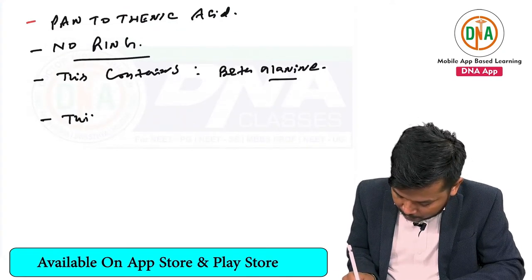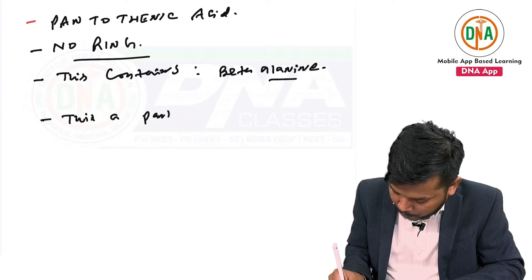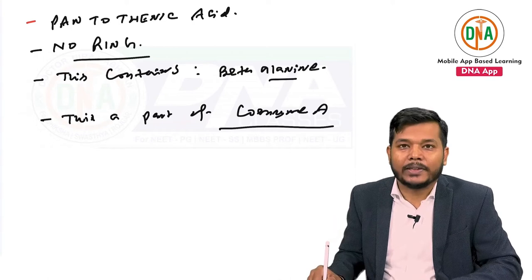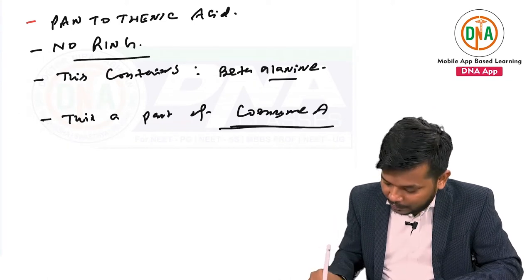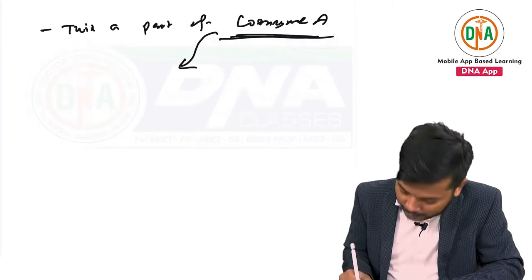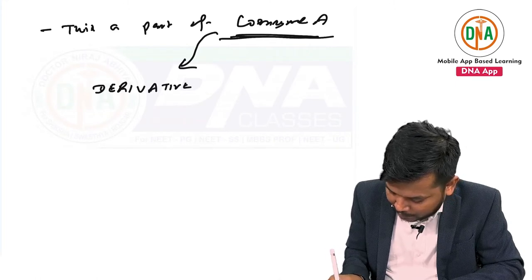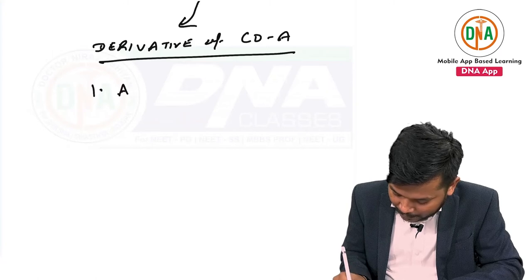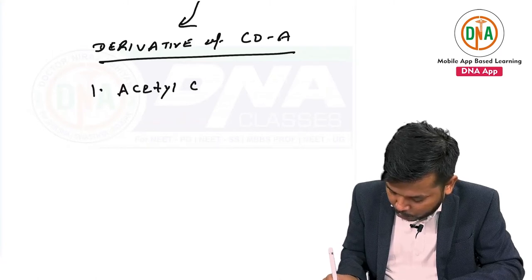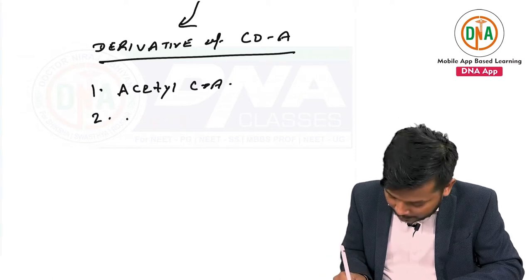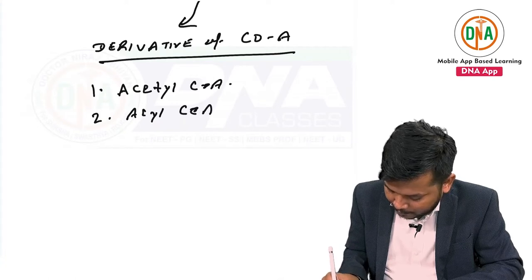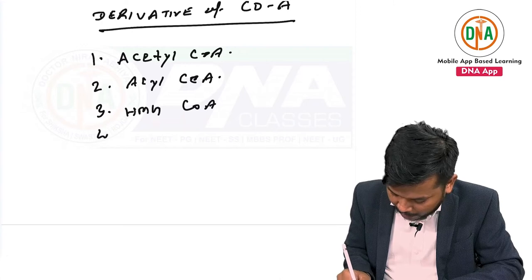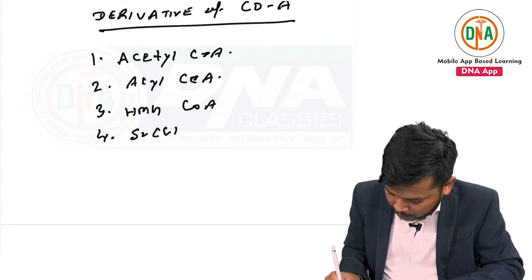Vitamin B5 is a part of coenzyme A. You must know the derivatives of coenzyme A. The derivatives are: first, acetyl-CoA; second, acyl-CoA; third, HMG-CoA; and fourth, succinyl-CoA.